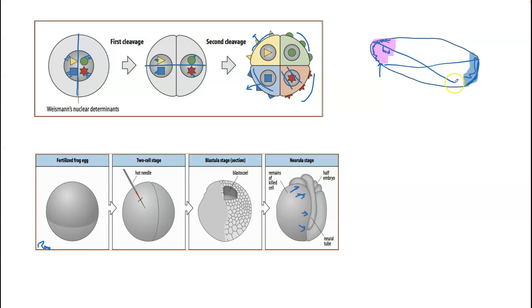The signaling that takes place is regulative, but the positioning of these—the unequal partitioning of them—is kind of mosaic. So you can see how the development is a combination of the two.